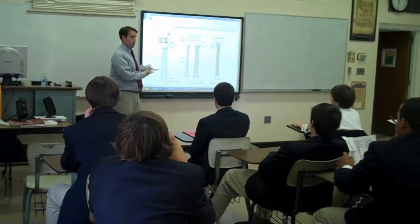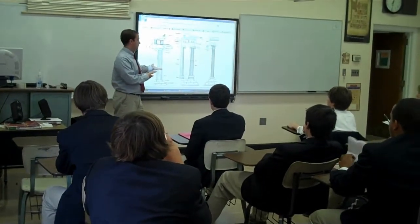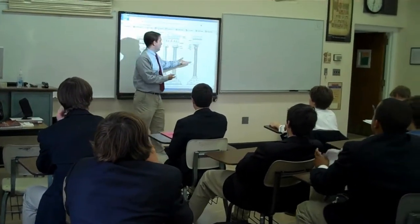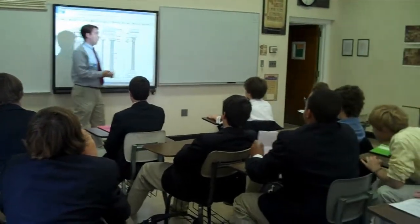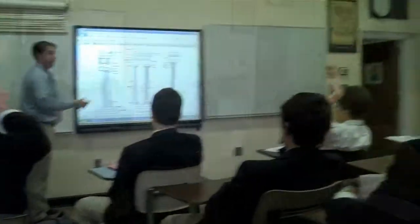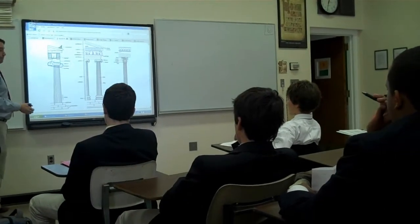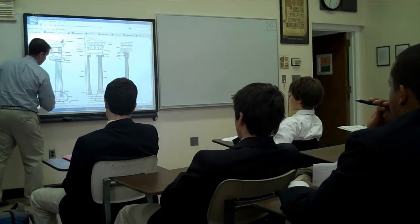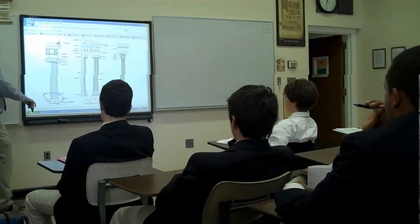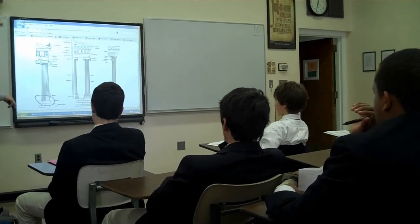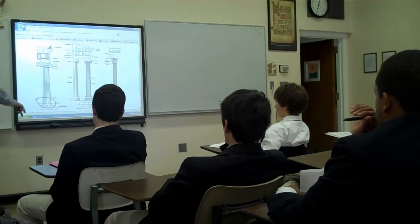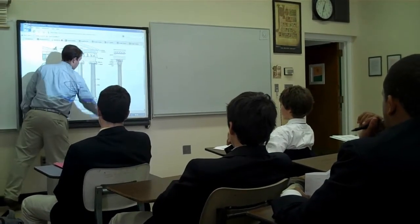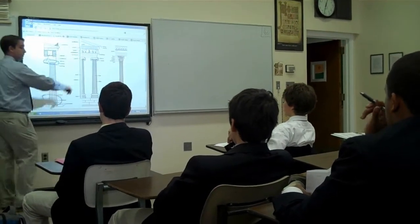This is Doric. This is Ionic. It doesn't have much of a base — zero base, in fact. It's going straight to the ground. That's a good point. Whereas the other ones do have bases, and they're very similar bases.